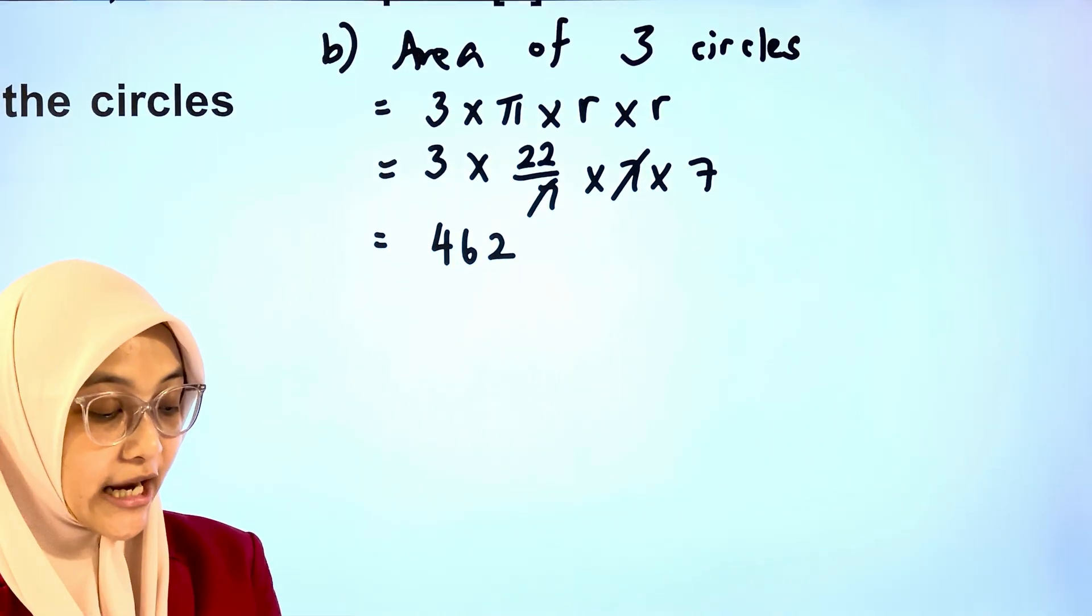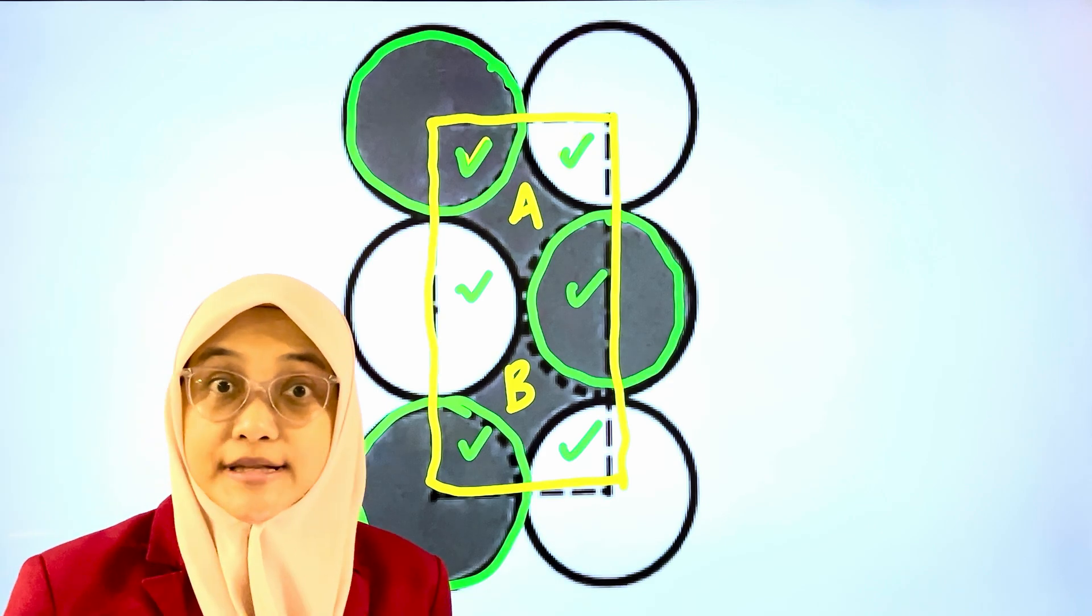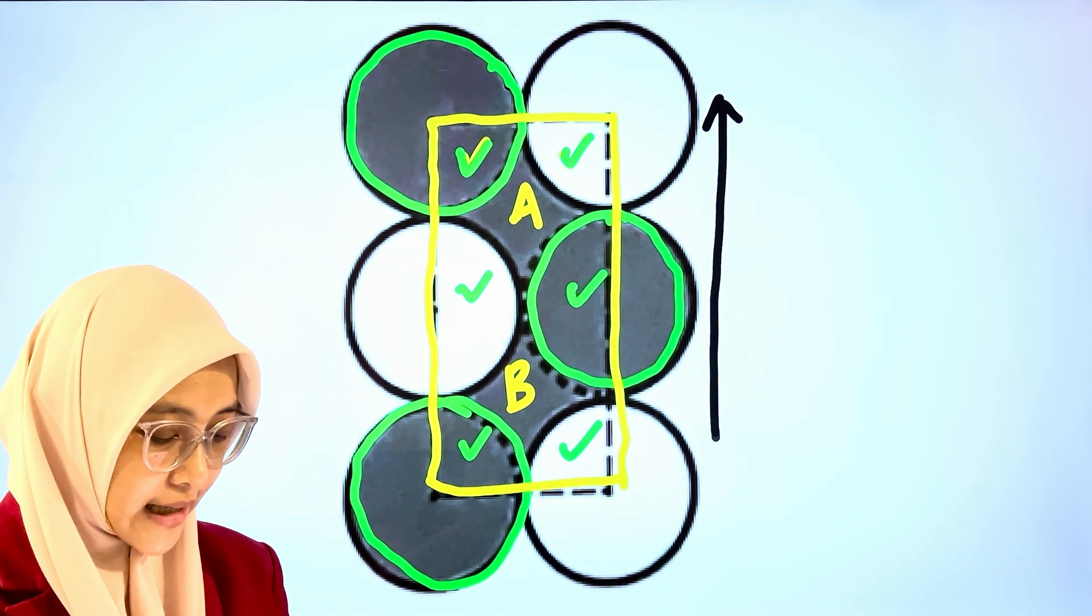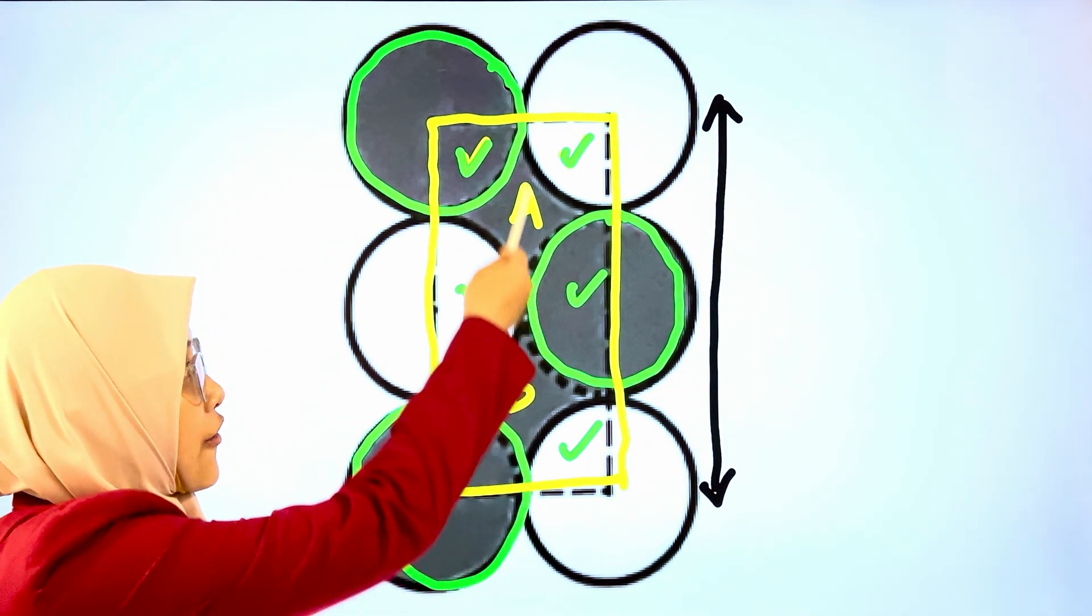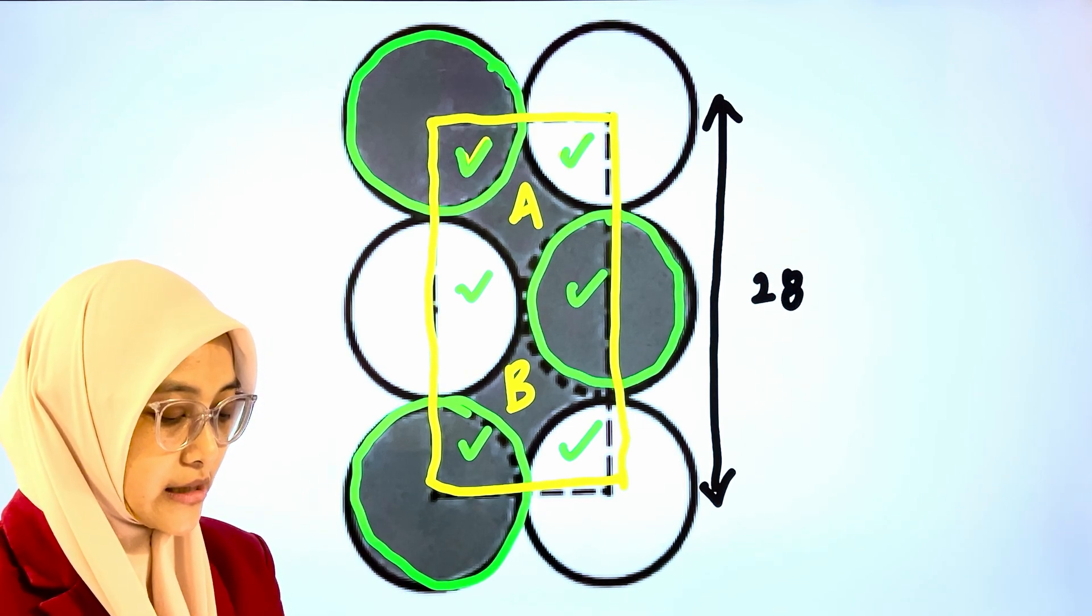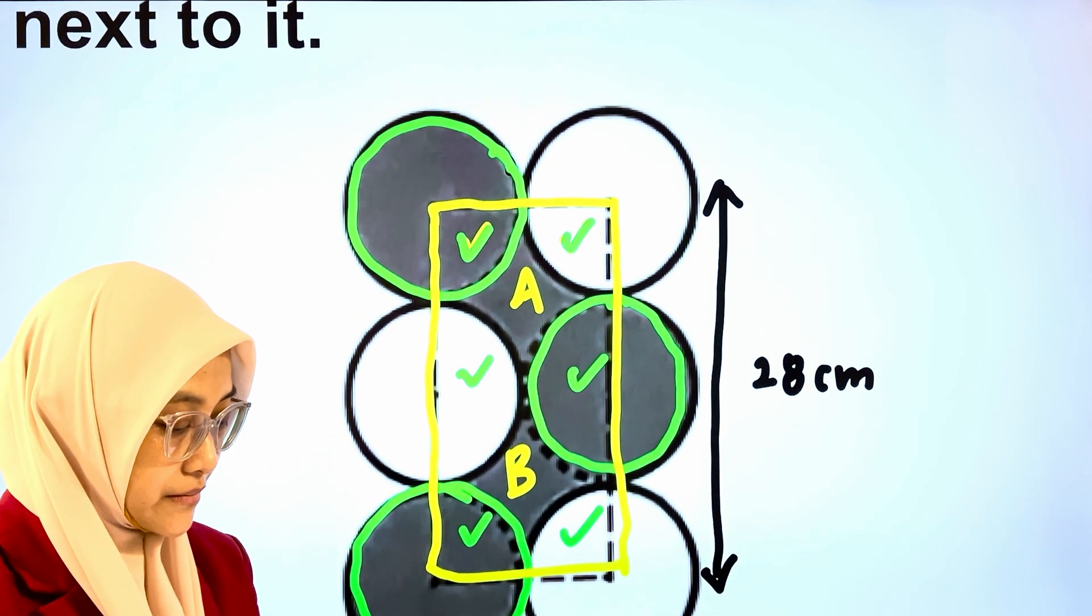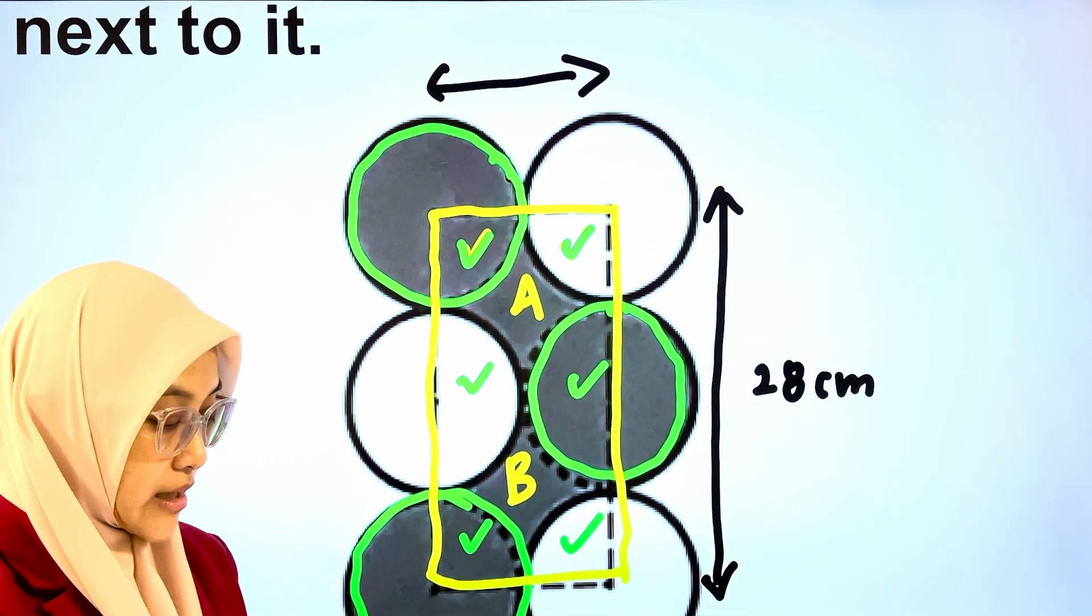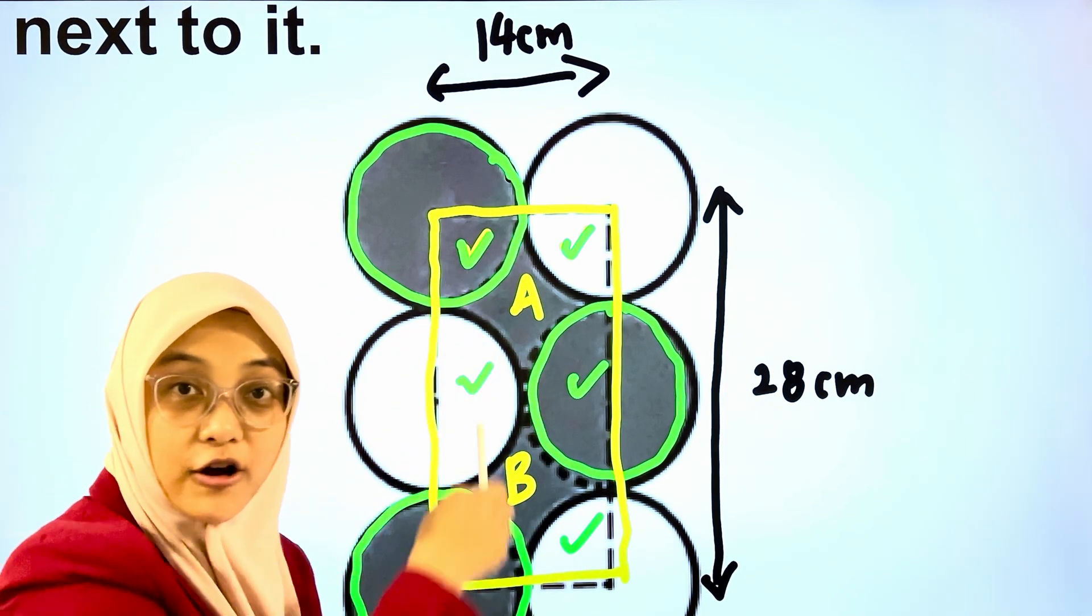Next, find the area of the rectangle. What are the dimensions of the rectangle? We have the length of the rectangle consisting of 4 radii. So that will be 28 cm. And the breadth consisting of 2 radii. So that makes 14 cm. So these are the dimensions of the rectangle.